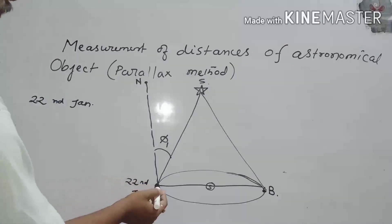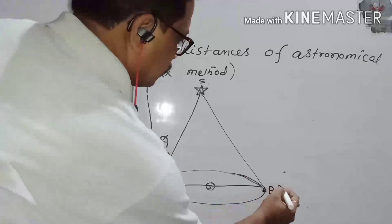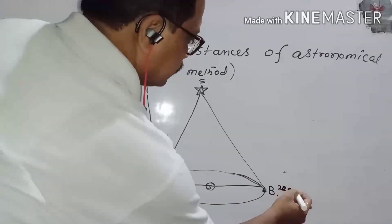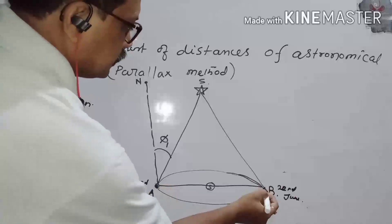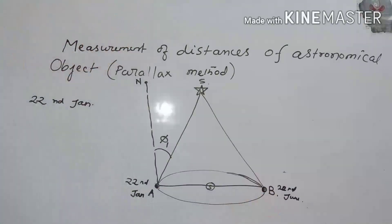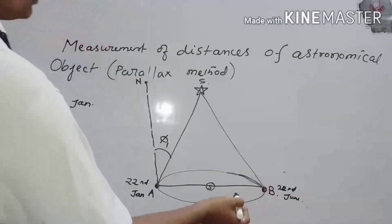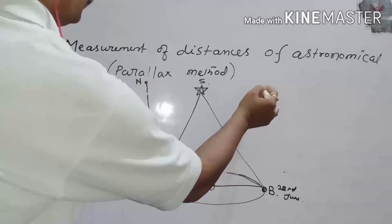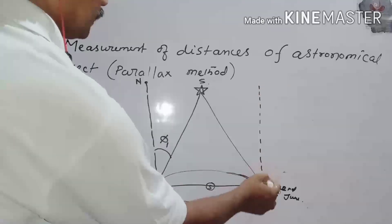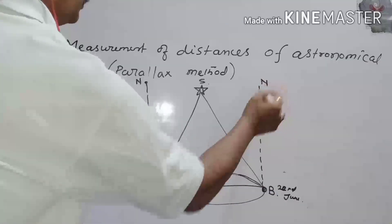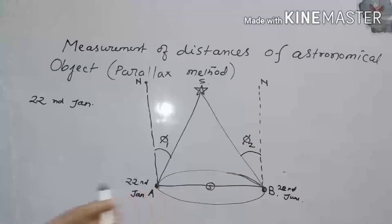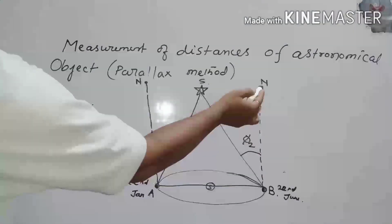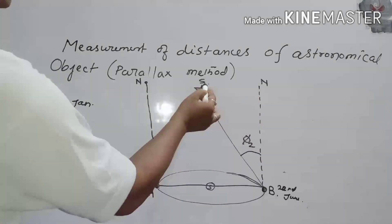After 6 months, that is on 22nd June, Earth reaches point B. Again at B, with respect to the same star N, we measure the angle phi 2, which is the angle between the direction of N and S.